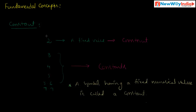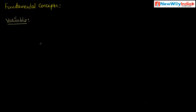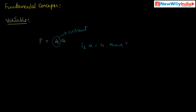Next, let us discuss Variable. Consider an example: the perimeter of a square, that is P = 4 × side A. Here, 4 is the constant — it is a fixed value. Now, what is the variable? If A = 4, then P = 4 × 4 = 16. At the same time, if A = 10, then P = 4 × 10 = 40.